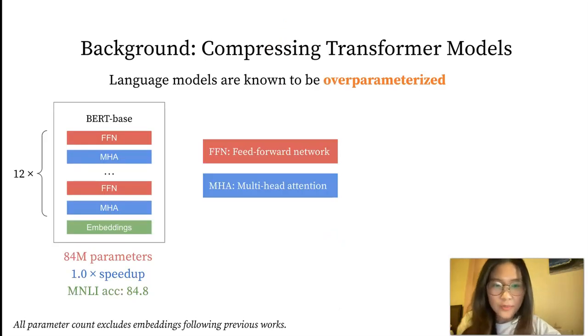It's widely known that language models are over-parameterized. Take a base-sized BERT model for example. It consists of 12 transformer blocks and has 84 million parameters. After fine-tuning the model on MNLI, it can achieve an accuracy of 84.8. Given such a large model size, a plethora of work have been proposed to compress transformer-based language models to boost efficiency.